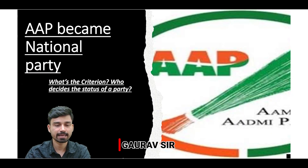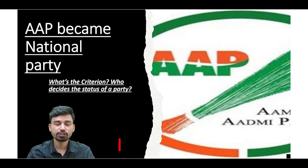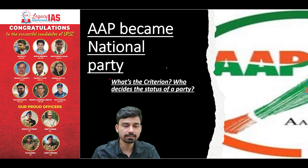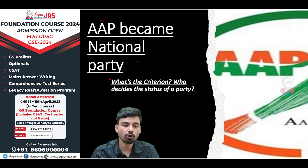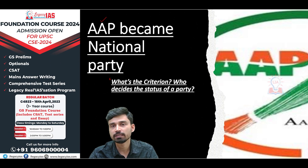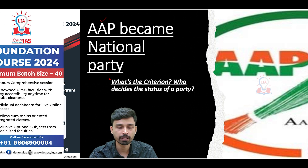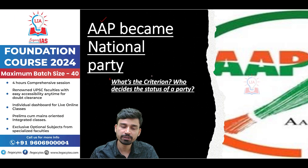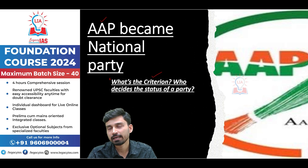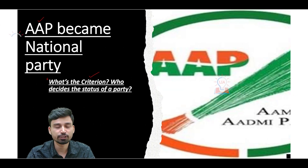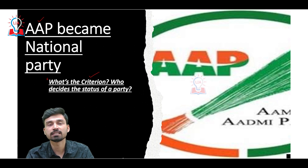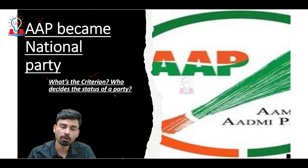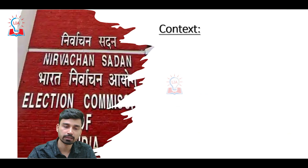Hello students, welcome to LegacyIAS Academy. In today's video, we are going to discuss the recent news that has come in the headlines: the Aam Aadmi Party, also called AAP, has been given the status of National Party by the Election Commission of India. We are going to discuss in great detail the criteria on the basis of which a party can be recognized as a National Party, the criteria for State Party recognition, and who is the authority that decides about this status.